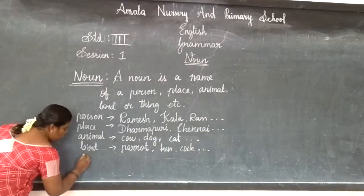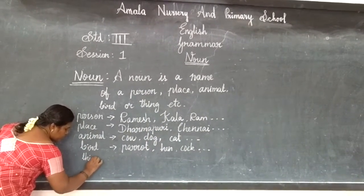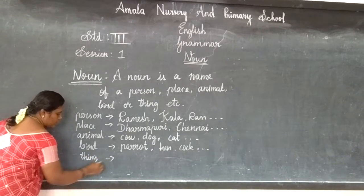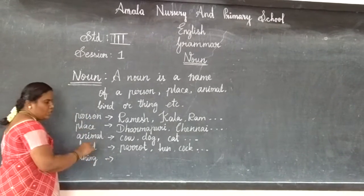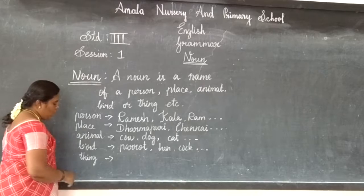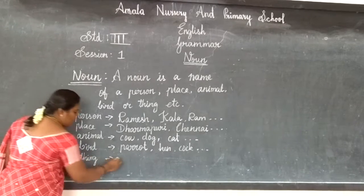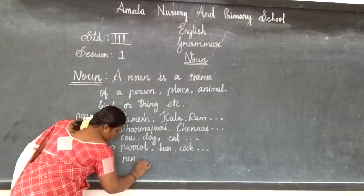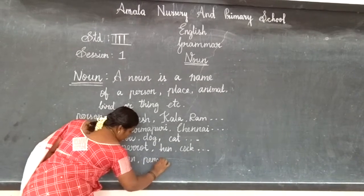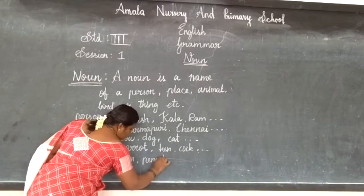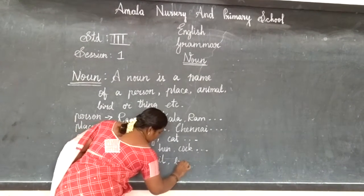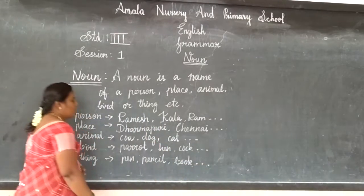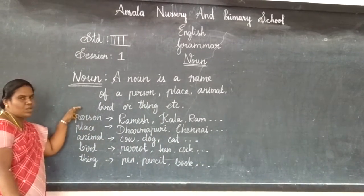Then we will go to thing. You know all the things around you. Example: pen, pencil, book etc. Once again I will repeat.